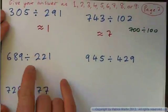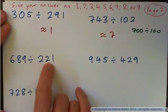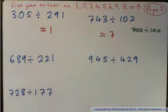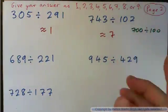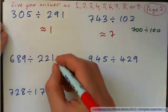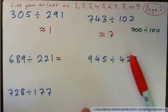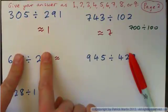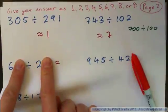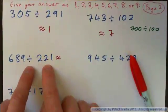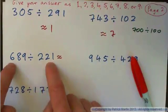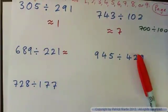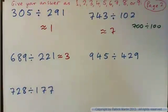What about this one? How many 221s do you think are contained in 689? You could think: this is kind of like 6 divided by 2, which is 3. And yeah, three of these would be about that — close enough. So that's about 3.